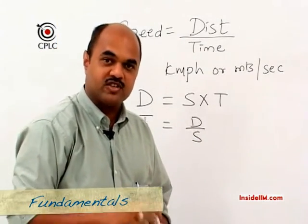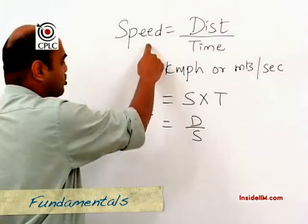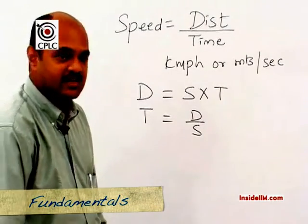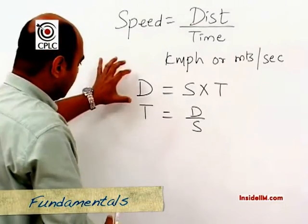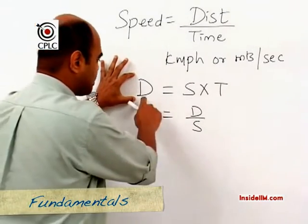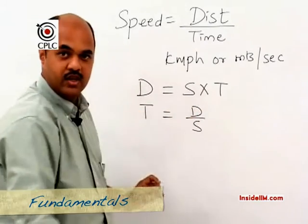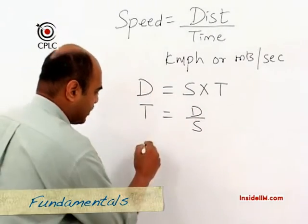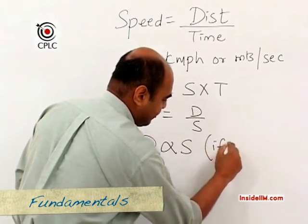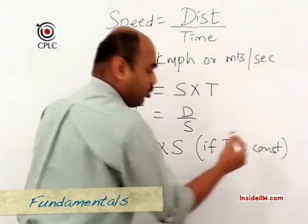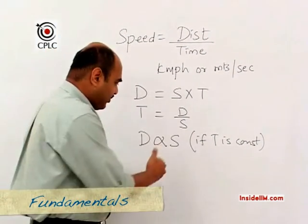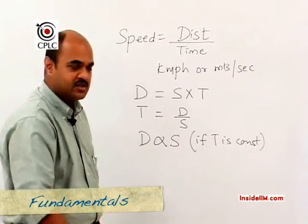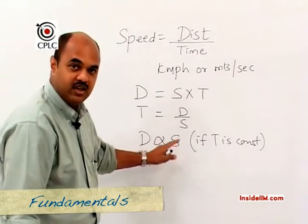Most problems in this topic will require one of these three formulae depending on what data is given and what is asked. If we focus on the statement distance equals speed multiplied by time, we can say that if time remains constant then distance varies directly as speed — meaning in the same time, traveling at a higher speed means covering more distance.